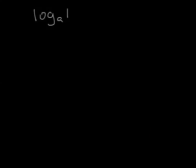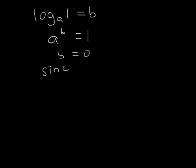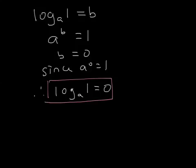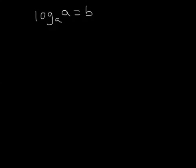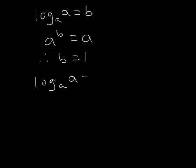Let's think about log to the base a of 1. The inverse gives us a to the power b equals 1, so b must equal 0, because a to the power 0 equals 1. So log to the base a of 1 equals 0. Now let's think about log to the base a of a. The inverse gives a to some power equals a, so b equals 1. Therefore log to the base a of a equals 1.